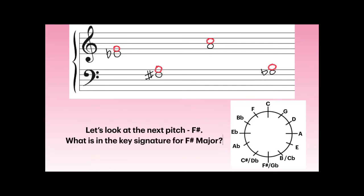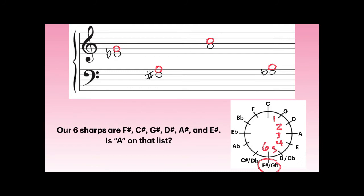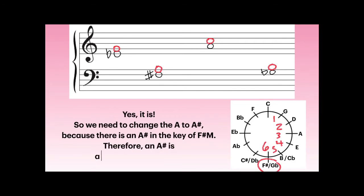Let's look at the next pitch, F-sharp. What is in the key signature for F-sharp major? Find it on your circle of fifths — it's at the bottom and has six sharps: F, C, G, D, A, and E. Is A on that list? Yes, it is. So we need to change the A to an A-sharp because there is an A-sharp in the key of F-sharp major. Therefore, an A-sharp is a major third above F-sharp.